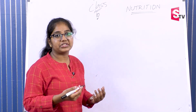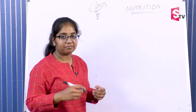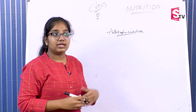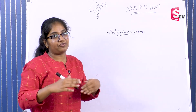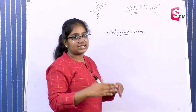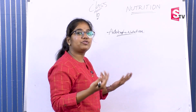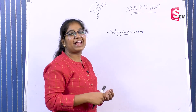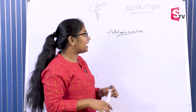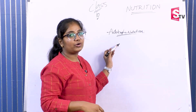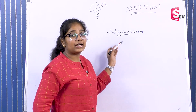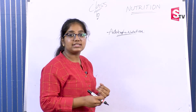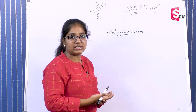What is Autotrophic Nutrition? It is when organisms use sunlight to prepare food. Nothing but plants. Plants carry out Autotrophic Nutrition.